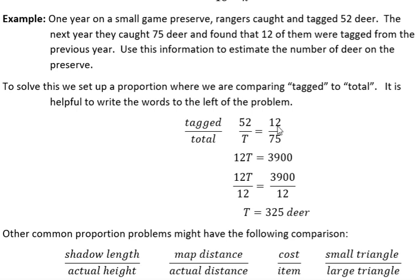And in the next year they caught 75 total deer. And of those 75, they saw that 12 of them were tagged. Now obviously this is not going to tell them exactly how many deer they have in the park, but it is a way to estimate the number of deer in that preserve. So now we're going to solve this proportion.